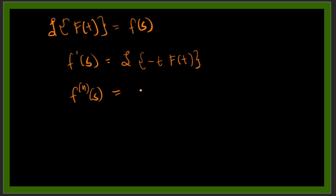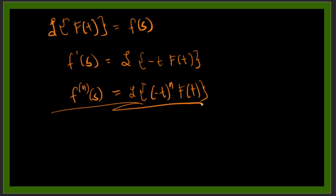The general formula is: the nth derivative of F(s) equals the Laplace transform of (-t)^n times f(t). This is the general formula for the derivative of a transform. We will use this formula to add entries to our table of Laplace transforms — getting the Laplace transform of functions multiplied by t^n — and that will be in the next video. I hope you learned something, and as always, enjoy learning.